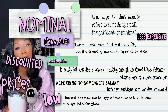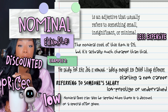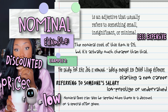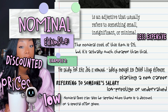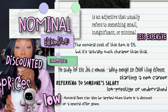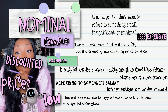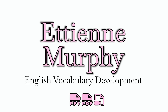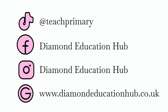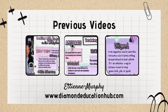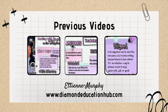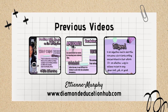In conclusion, the word nominal is versatile and can be used in various contexts and settings. It shows that something is small, insignificant, and of little or no value compared to something else — whether it be a salary, price, fee, or donation.